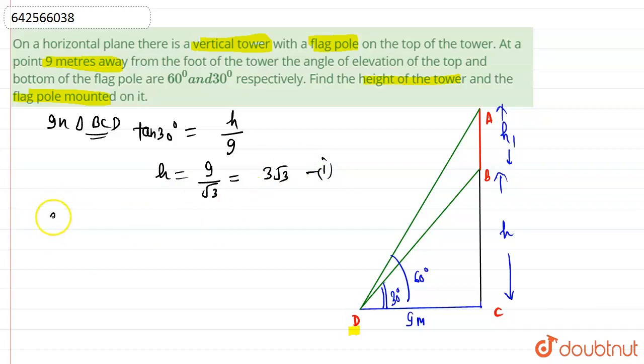Now in triangle ACD, because it is also a right angle triangle, we can apply tan 60° is equal to H plus H1 divided by 9. So 9 root 3 is equal to H plus H1.